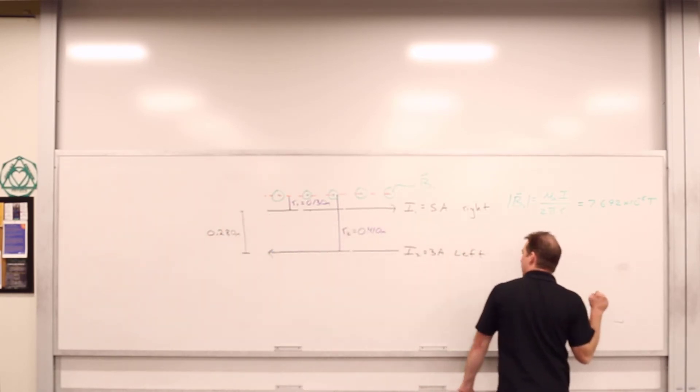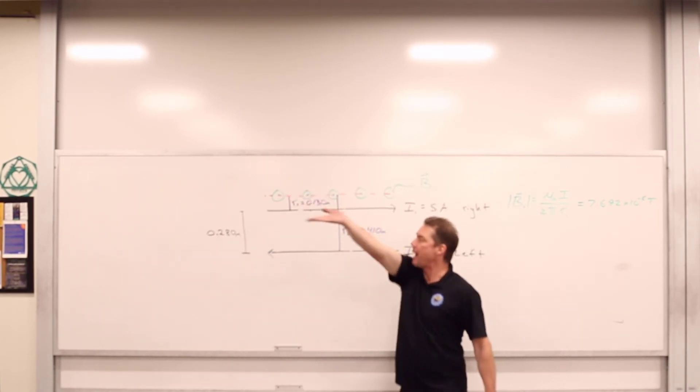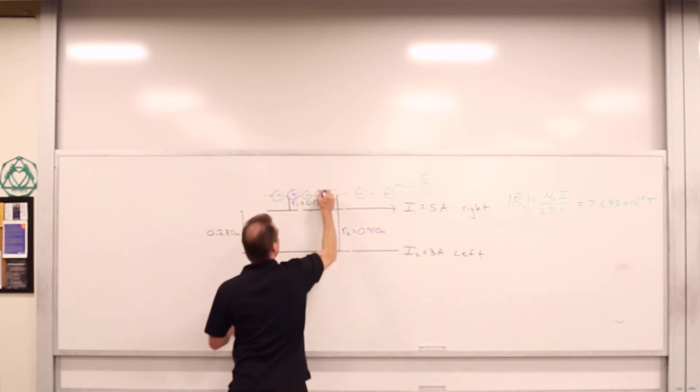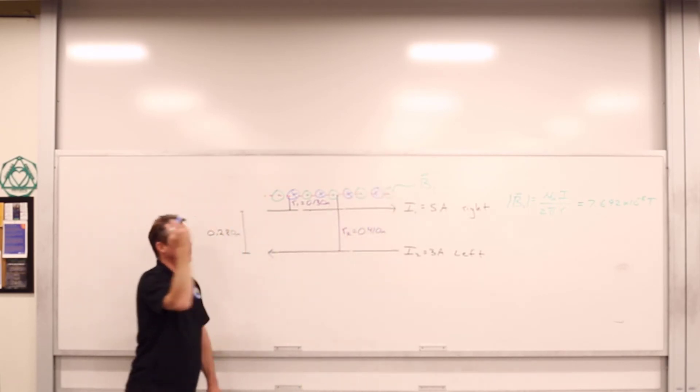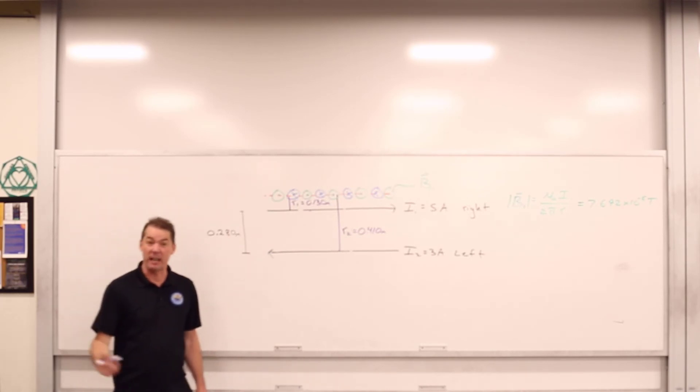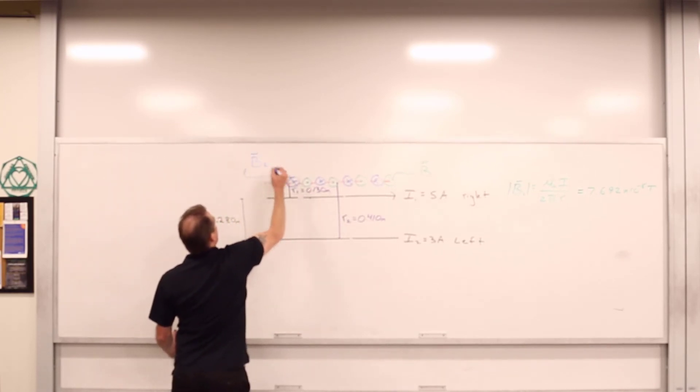So current carrying wire number two has direction to the left. We're looking up above it. The magnetic field that it generates is into the board. Well, well, look at this. We've got opposition with respect to the directions of the magnetic fields generated by these two wires. So ultimately we're going to get a subtractive effect between them. Nonetheless, we've got ourselves this is our B2.